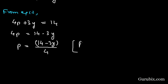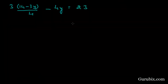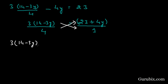We substitute this value into equation number 2: 3 × (14 - 3y)/4 - 4y = 23. Taking -4y to the right-hand side gives 23 + 4y. After cross multiplication: 3(14 - 3y) = 4(23 + 4y).